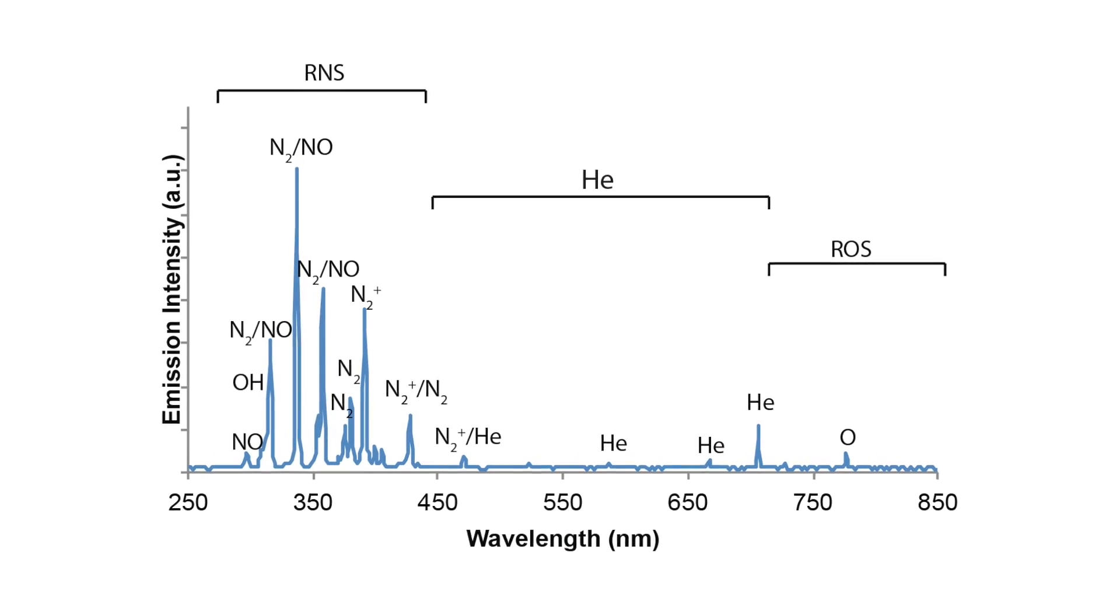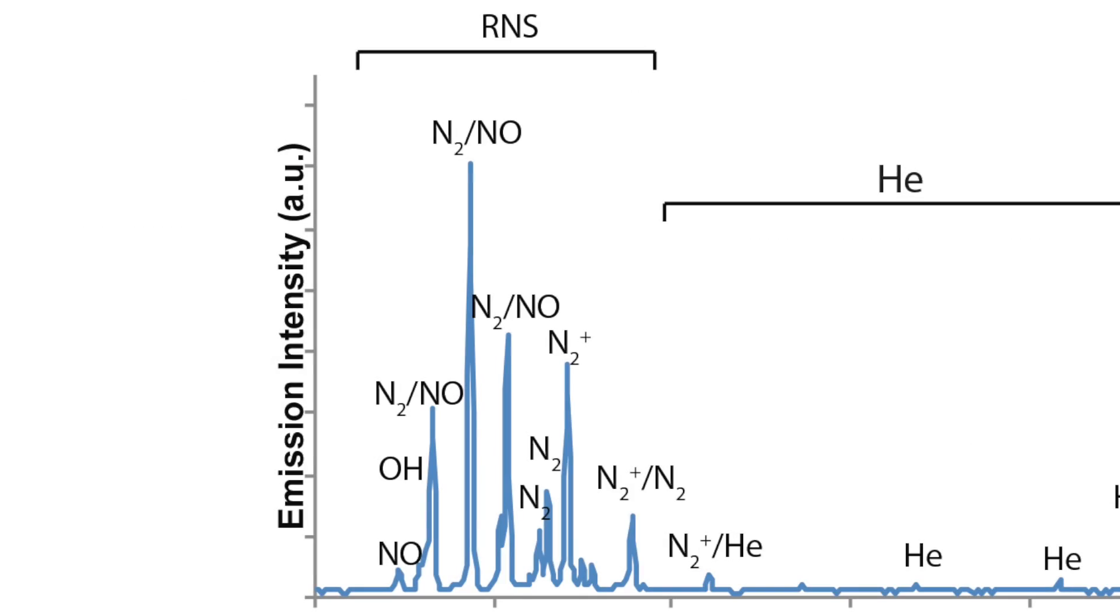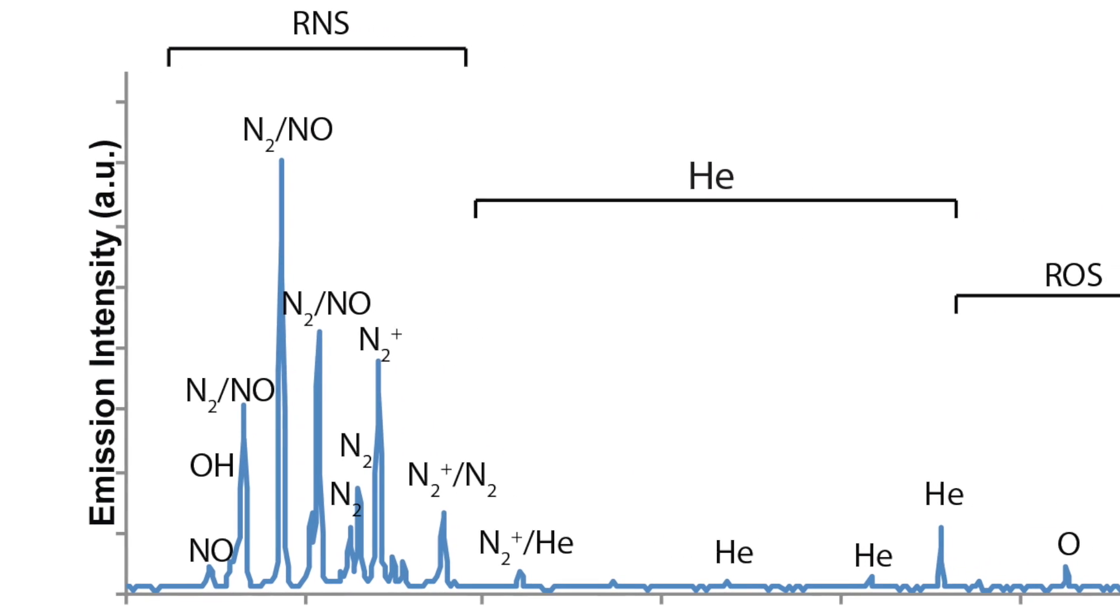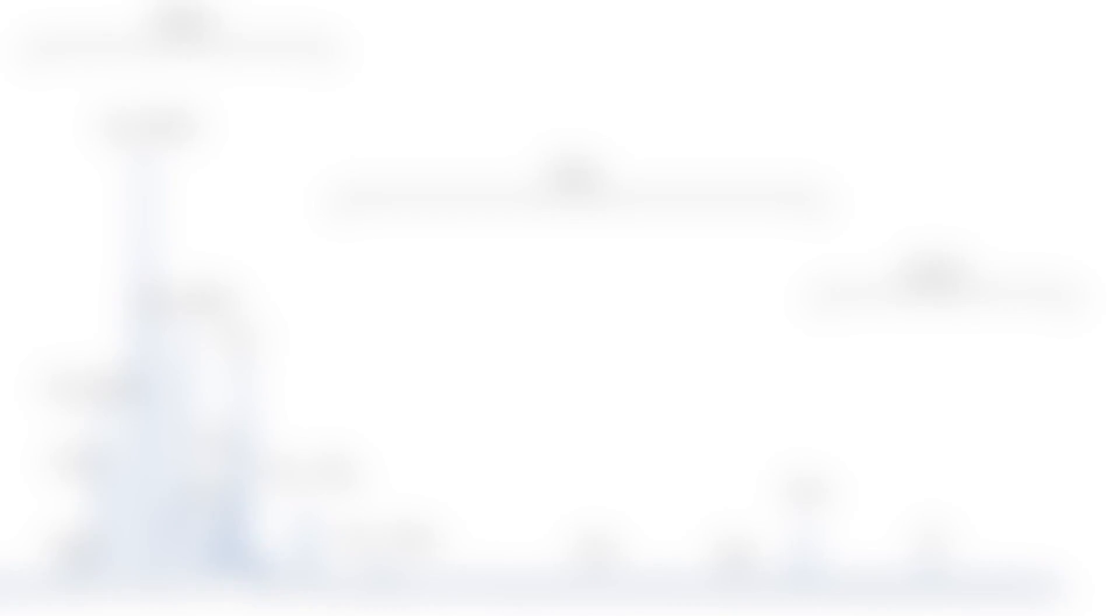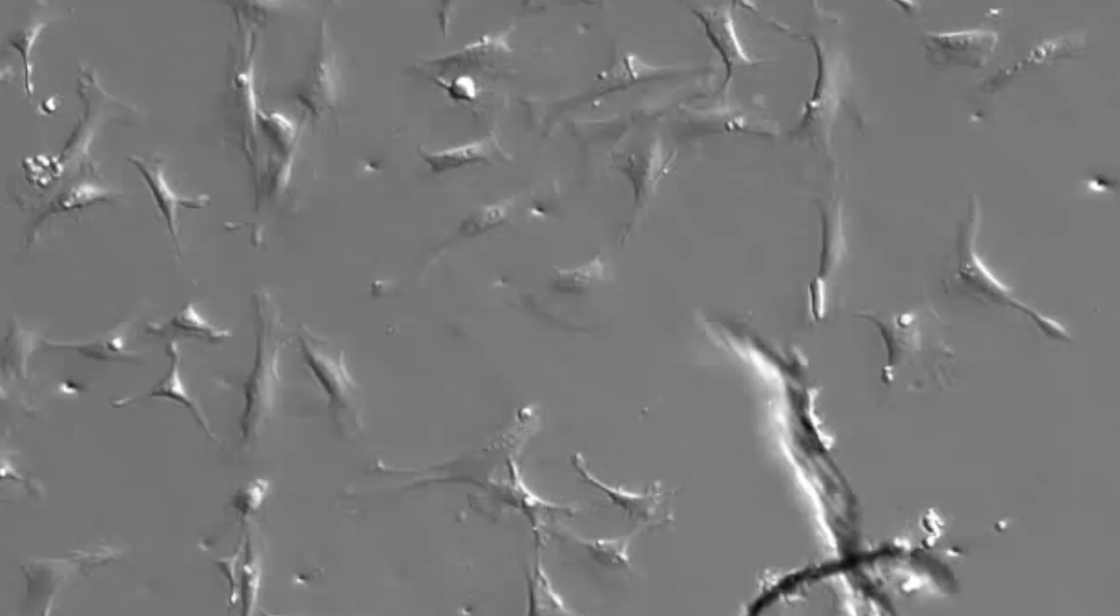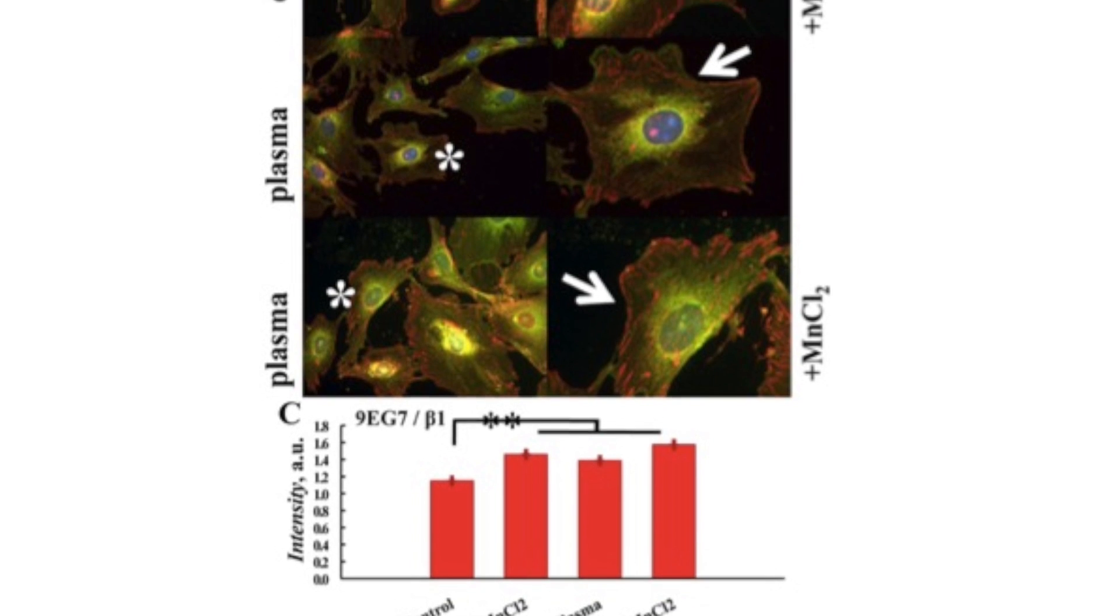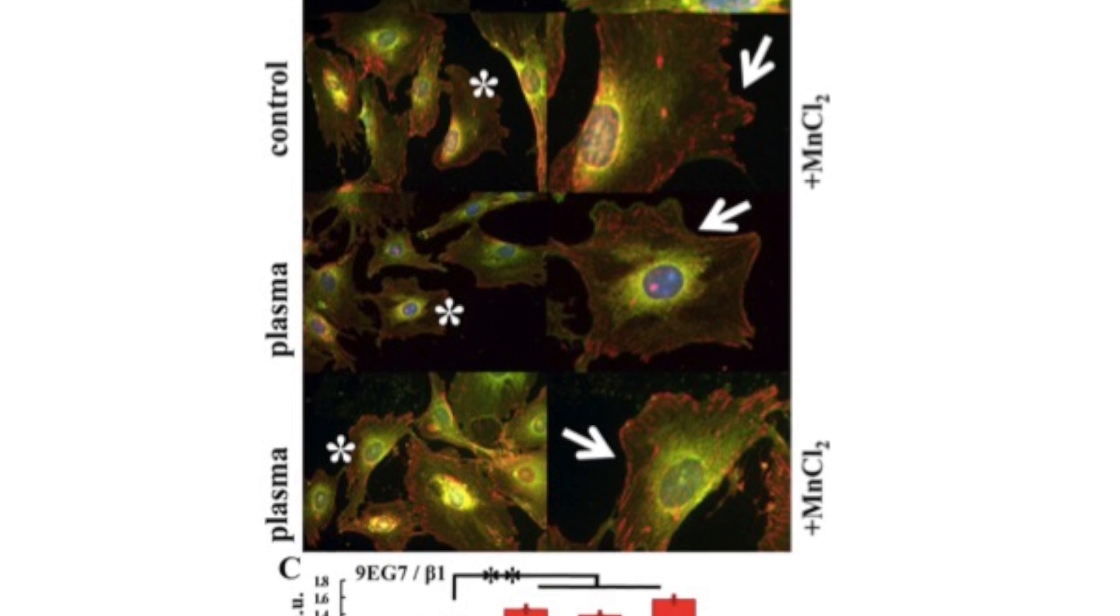The plasma source is a cocktail. It's a cocktail of many species including many reactive species such as reactive oxygen species and reactive nitrogen species. All these species interact with cells or with the tissue and it causes certain pathways in the cell.